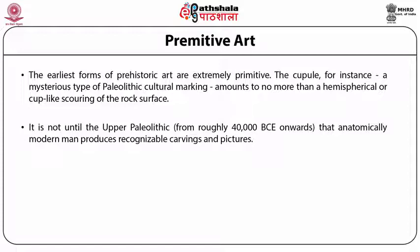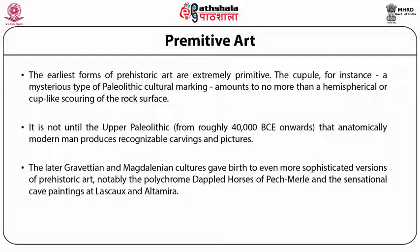Aurignacian culture in particular witnessed an explosion of rock art including the El Castillo cave paintings, the monochrome cave murals at Chauvet, the Lion Man of Hohlenstein-Stadel, the Venus of Hohle Fels, the animal carvings of the Swabian Jura, and Aboriginal rock art from Australia. The later Gravettian and Magdalenian cultures gave birth to even more sophisticated versions of prehistoric art, notably the polychrome dappled horses of Pech Merle and the sensational cave paintings at Lascaux and Altamira.